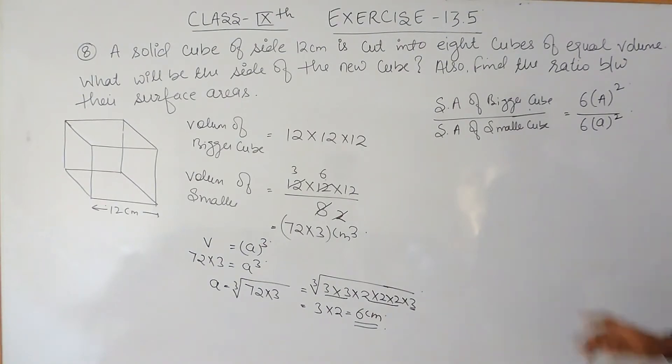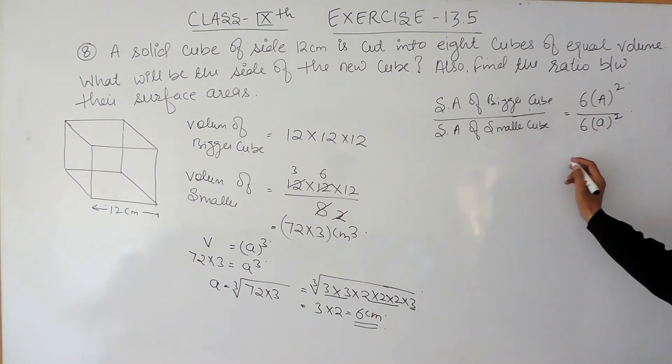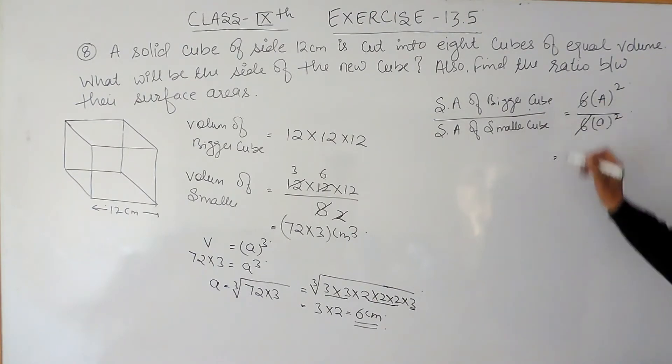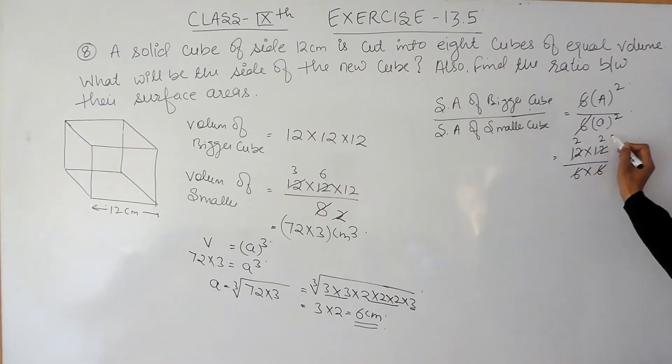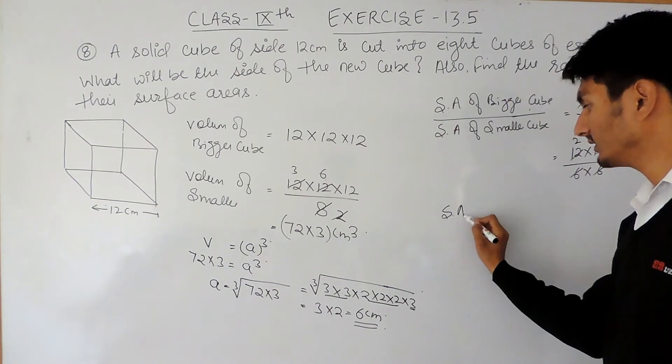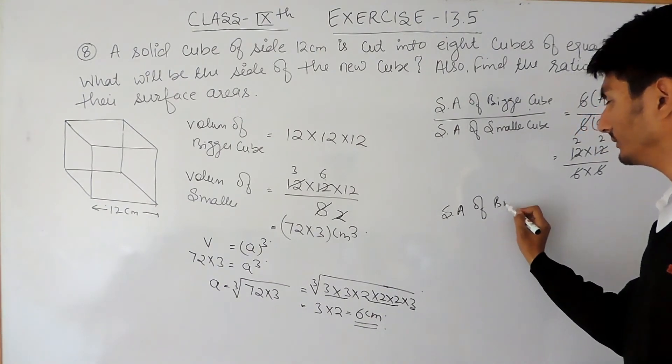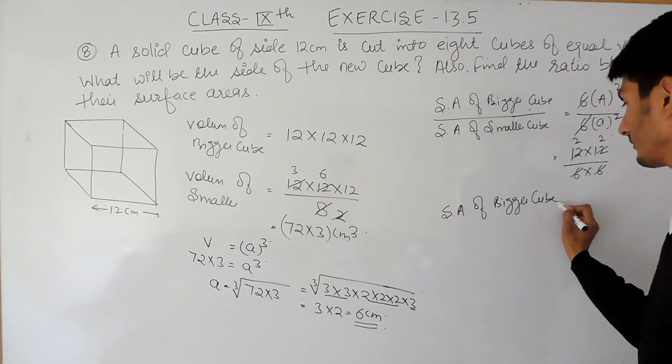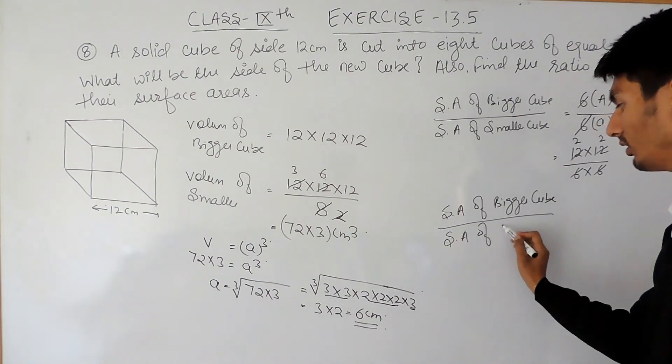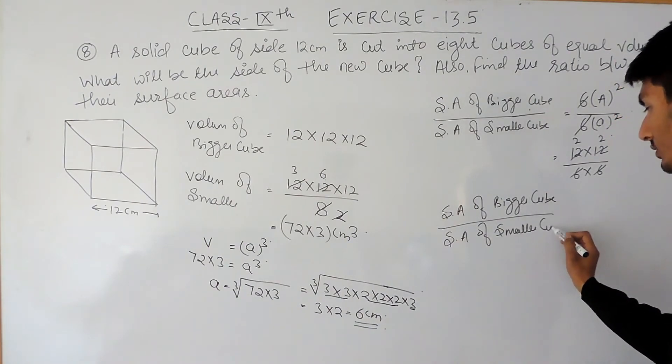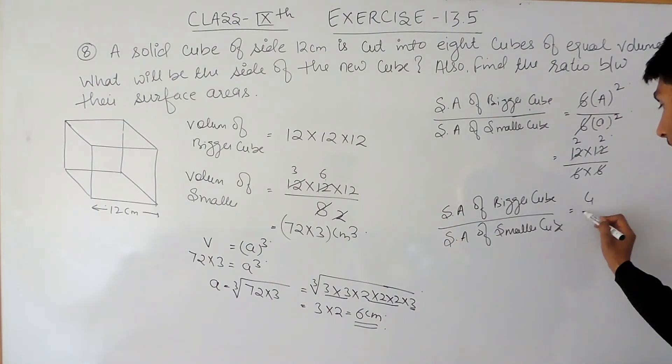The formula will remain the same, but for the bigger cube side is capital A, and for the smaller it is small a. So 6 can be cancelled as 6. a here is 12 multiplied by 12, and small a is 6 multiplied by 6. So this can be cancelled 2 times. Again, this can be cancelled 2 times. So the ratio between surface area of the bigger cube is 2, surface area of smaller cube is 4 is to 1.